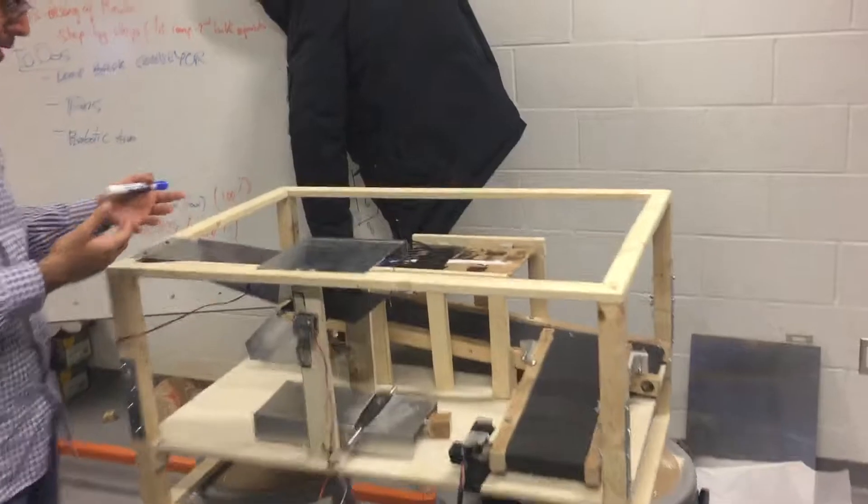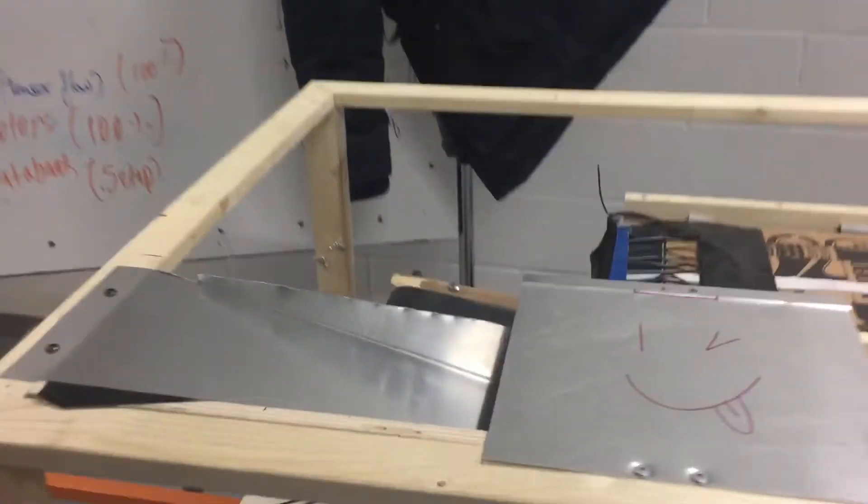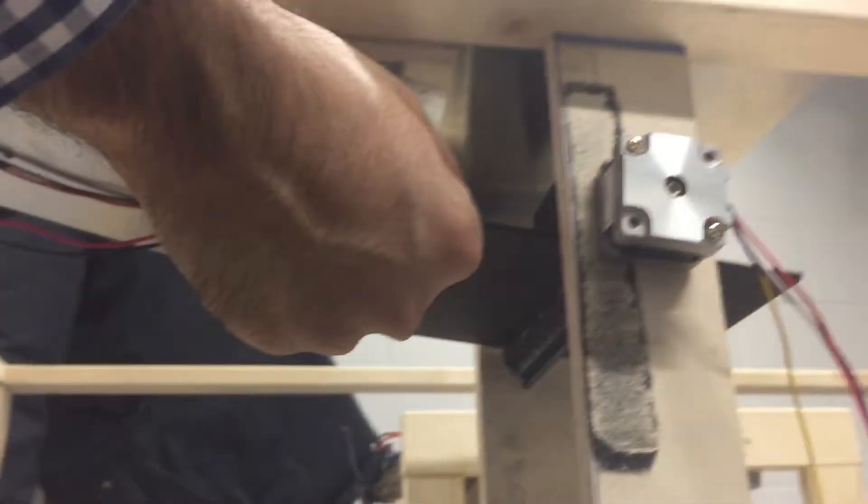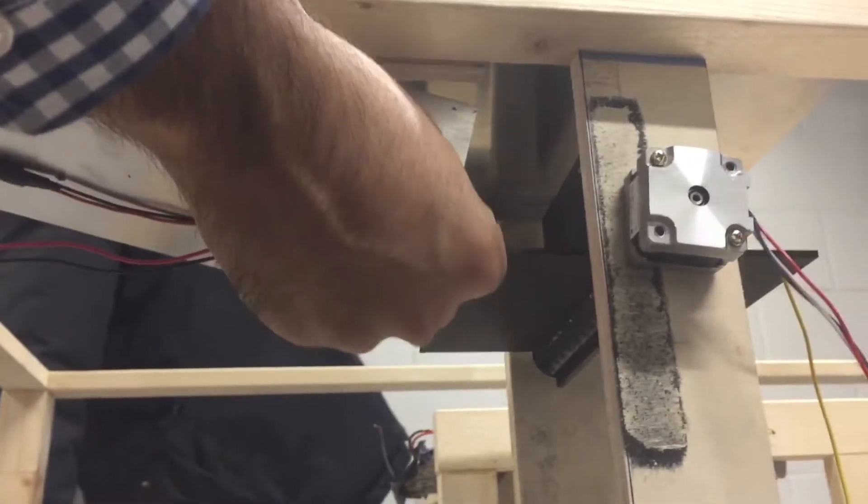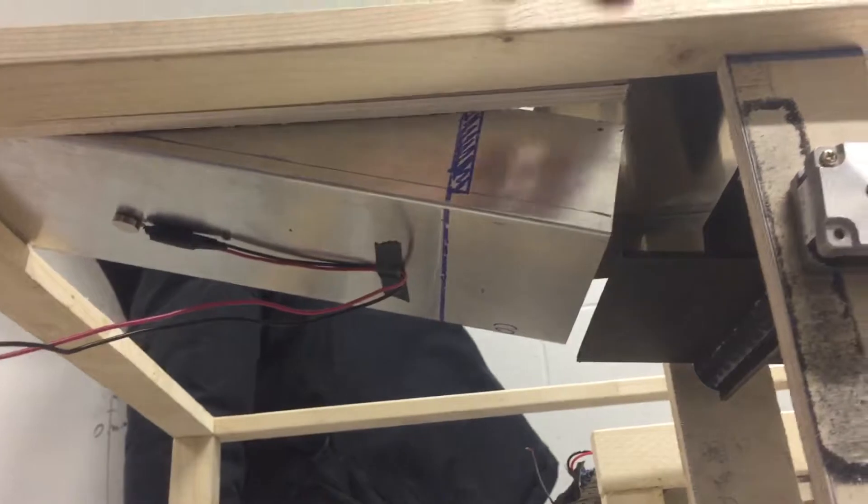It starts from the ramp, which has a vibration motor. We input pieces from here and have a flap that controls the amount of pieces flowing toward the system. This is called the bulk separation unit.